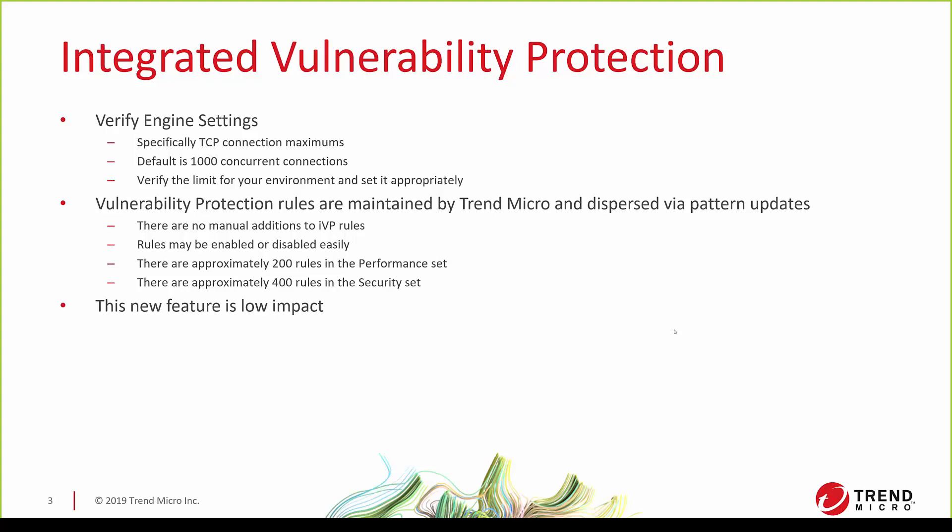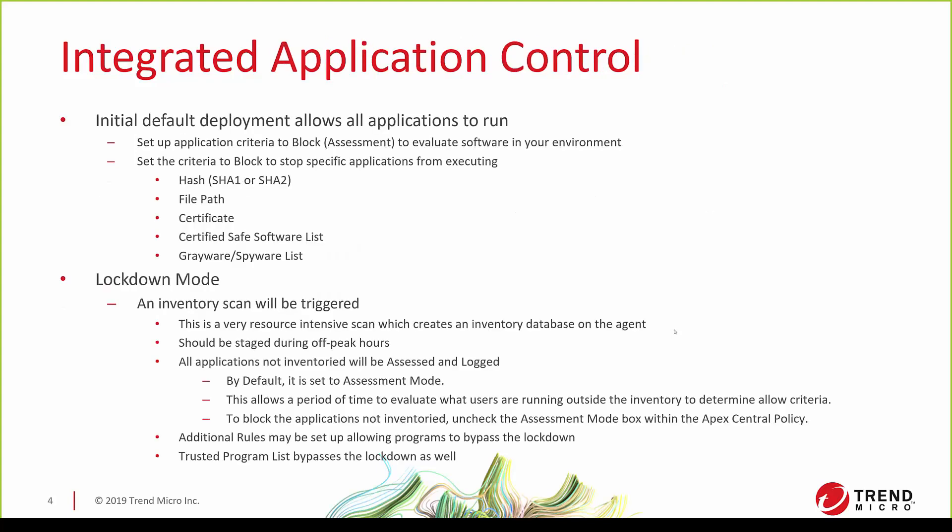That's pretty much it for vulnerability protection in regards to its deployment impact. Now onto integrated application control. The initial default deployment allows all applications to run. You set it up, deploy the feature, and if you don't change anything, all applications are allowed to run and there may not even be default criteria assigned so you can assess. To set up application criteria you do that via the policy. You can set a specific piece of software to block and set it to assessment mode, which allows you to evaluate all the logs coming in on users utilizing that specific software.